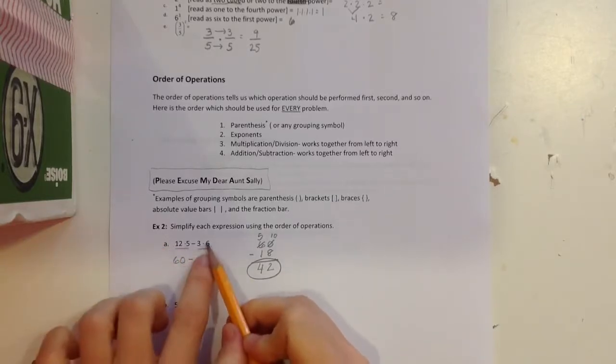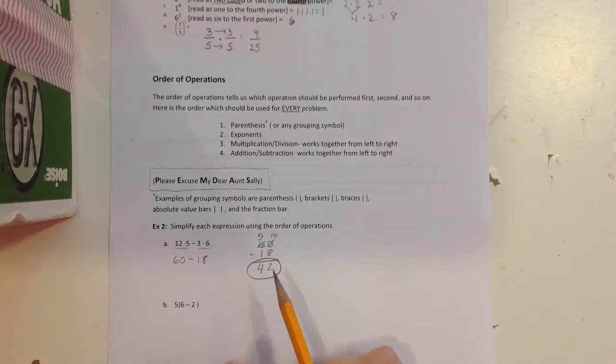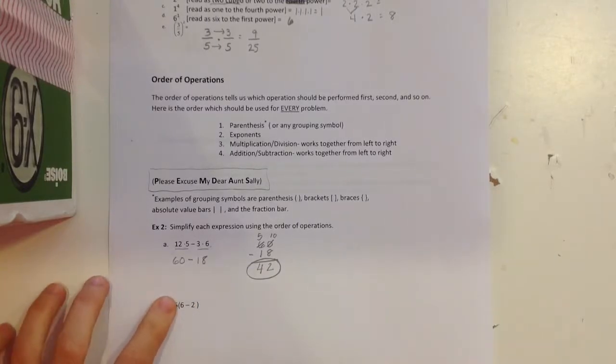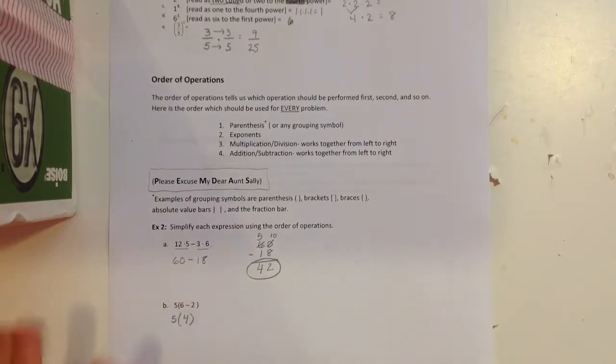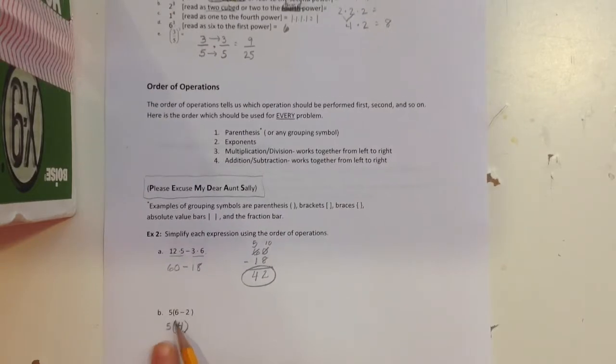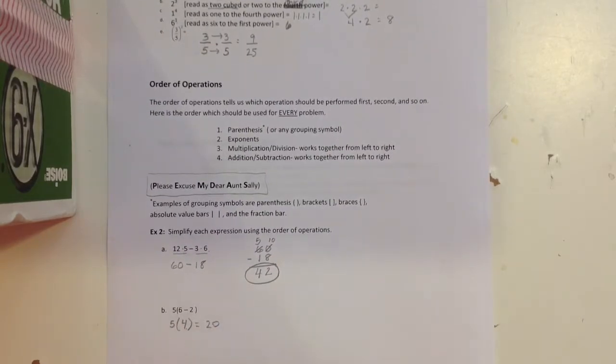So I multiplied first on both and then I subtracted. On this one, the second example, I do have grouping symbols, so that means I'm going to work inside the parentheses first. I'm not even going to look at that 5, I'm only going to look at that 6 minus 2. 6 minus 2 is 4. Keep your parentheses and bring down what we haven't worked. We haven't done anything with that 5, so I brought it down. Now the only thing that's left to do is to multiply. When you have parentheses with only one number in the middle of them, that's multiplication. 5 times 4 is 20 and that's my answer. I'm going to pick up where I left off in my next video. Good to see you.